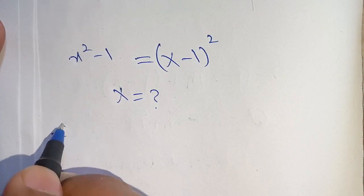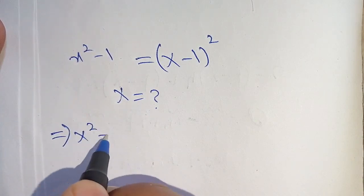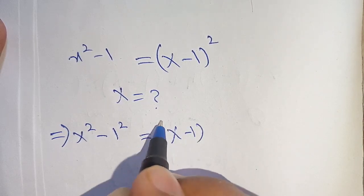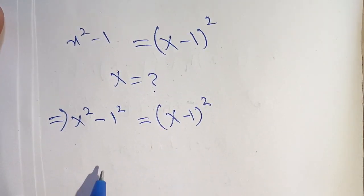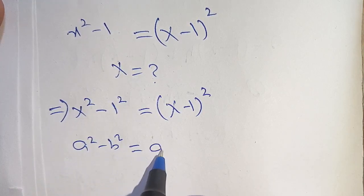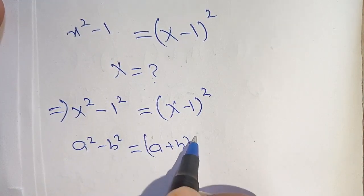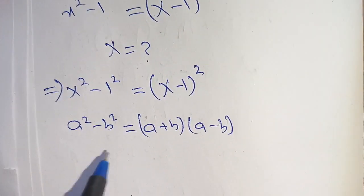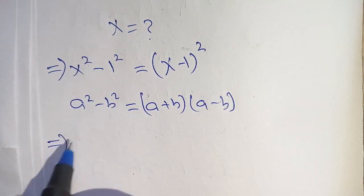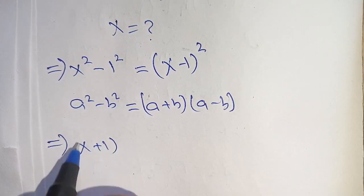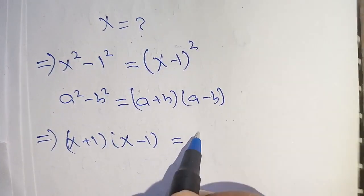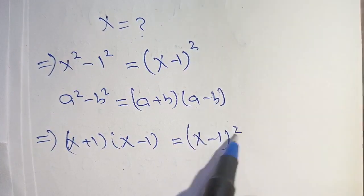We can write x squared minus 1 as x squared minus 1 squared, which is equal to x minus 1 whole squared. Now we know that a squared minus b squared is equal to a plus b times a minus b. Using this identity on the left hand side, it becomes x plus 1 times x minus 1 is equal to x minus 1 whole squared.